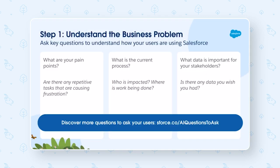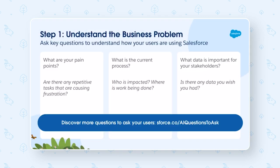Let's start with understanding the business problem. First, like with any solution you're building in Salesforce, start by talking to your users to understand the business problem. You want to ask them questions to understand how they're using Salesforce. Remember the five questions you can ask your users to uncover opportunities to use AI in your organization? Many of these questions are going to be similar.